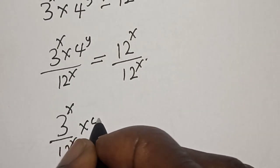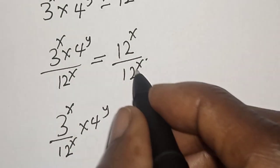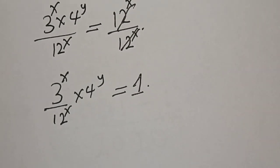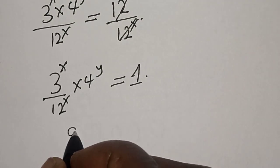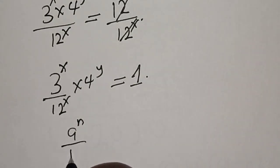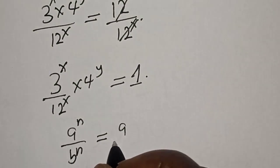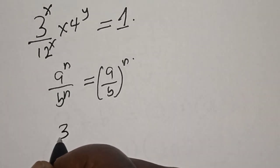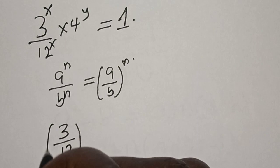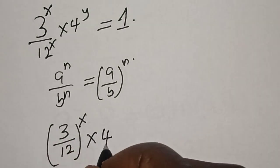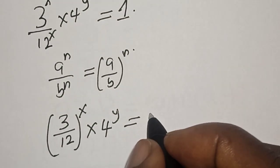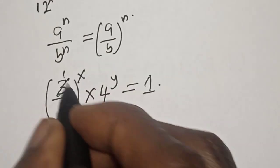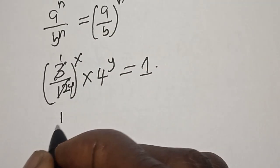We have 3 raised to power s over 12 raised to power s, multiplied by 4 raised to power y. The right side cancels to 1. Remember: if you have a raised to power n divided by b raised to power n, this is the same as a over b raised to power n. So the left hand side becomes 3 over 12 raised to power s, multiplied by 4 raised to power y, is equal to 1.